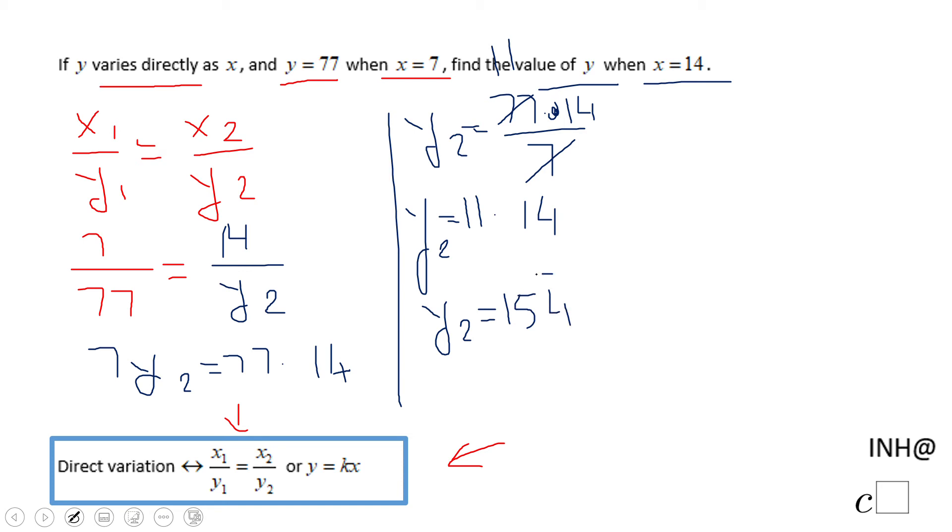And the second method, which is using this option, says y equals kx. So in this case I'm going to replace y with 77 and x with 7.